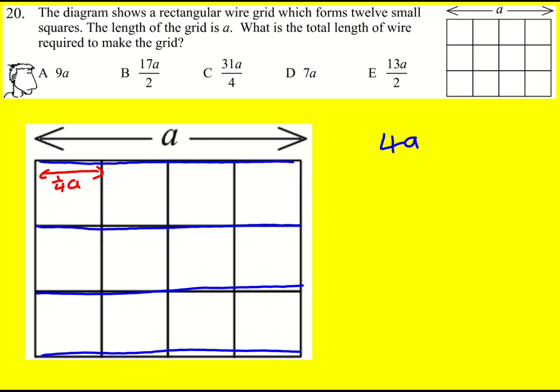which means when I add up the vertical lengths I've got three lots of a quarter a for each one. Three times a quarter a and then there are five of them. So I'm going to be adding these together.